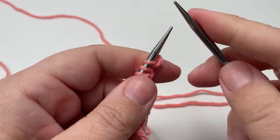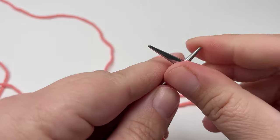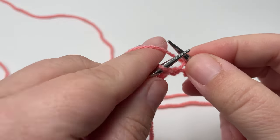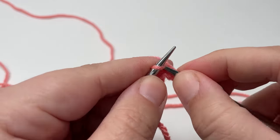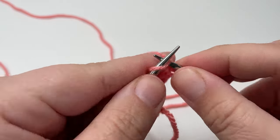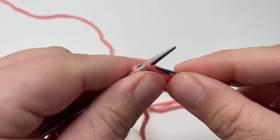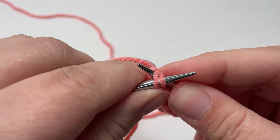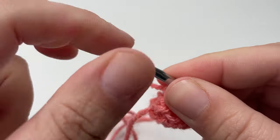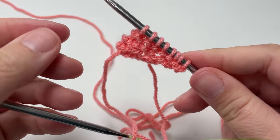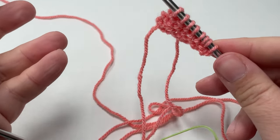Row two of your two row repeat, you knit the first two stitches, yarn over to create an increase and then knit until the last two stitches. And then for the last two stitches, you want to knit them together through the back loops. And you will work those two rows as many times as you want until your shawl is as big as you want.